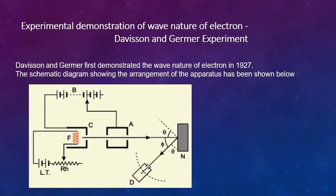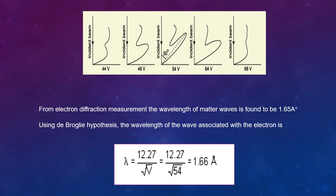By moving the detector on a circular scale, the intensity I of scattered electrons is measured for different angles of scattering θ, that is, the angle between incident and scattered beam of electrons. The variation of intensity I with scattering angle θ was obtained for different values of accelerating voltage V. In this experiment, the voltage was varied from 44V to 68V. It was observed that a strong peak appeared in the intensity of the scattered electrons for an accelerating voltage of 54V at a scattering angle θ = 50°. The appearance of the peak in this particular direction is due to the constructive interference of electrons scattered from different layers of atoms in nickel crystal.